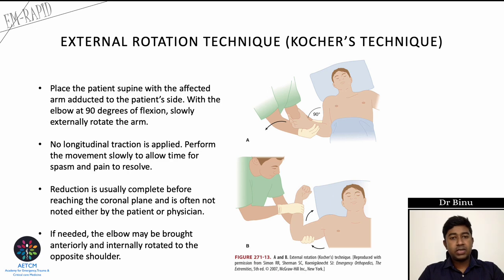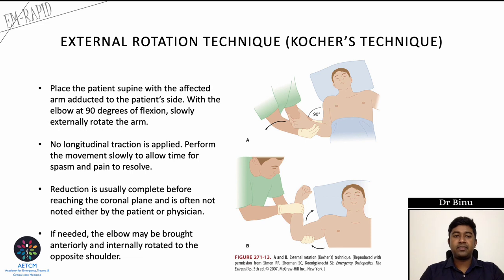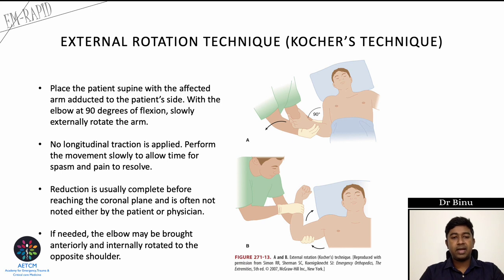The Kocher technique (external rotation technique): the patient is supine with the affected arm adducted and the elbow flexed at 90 degrees. The arm is slowly externally rotated — no longitudinal traction is applied. The movement is performed slowly to allow spasm and pain to subside. Reduction usually completes before reaching the coronal plane and is often unnoticed by either physician or patient. If needed, the elbow may be brought anteriorly and internally rotated toward the opposite shoulder.